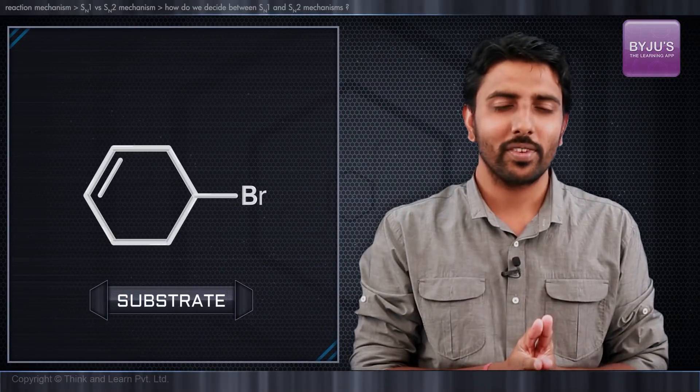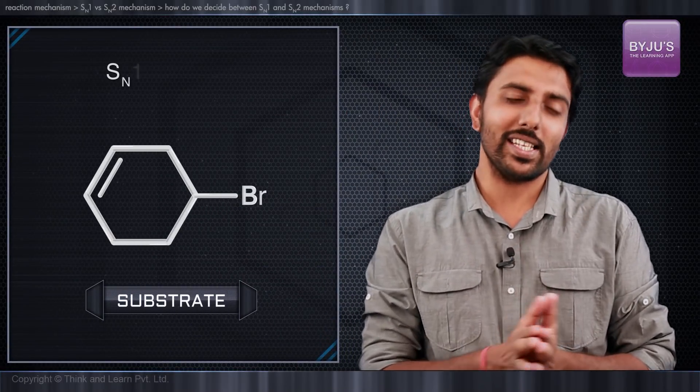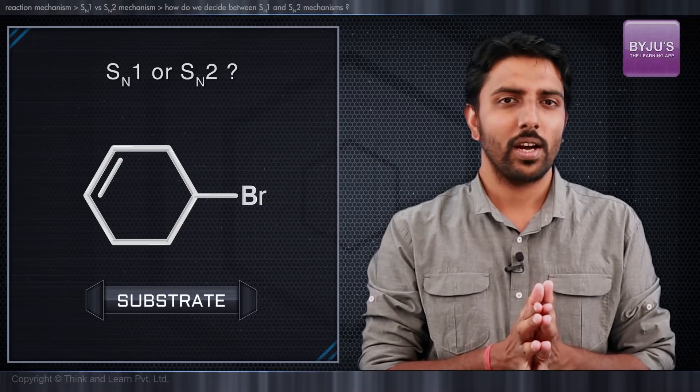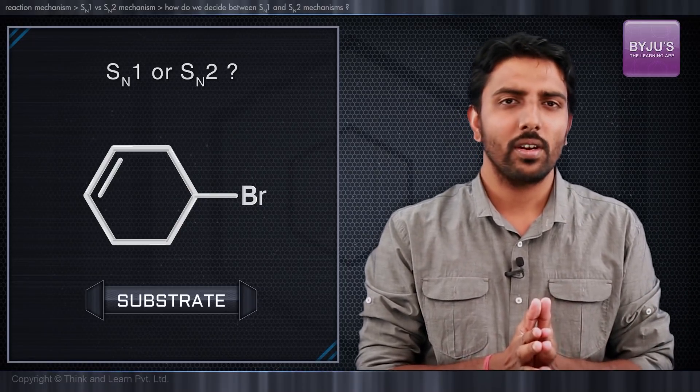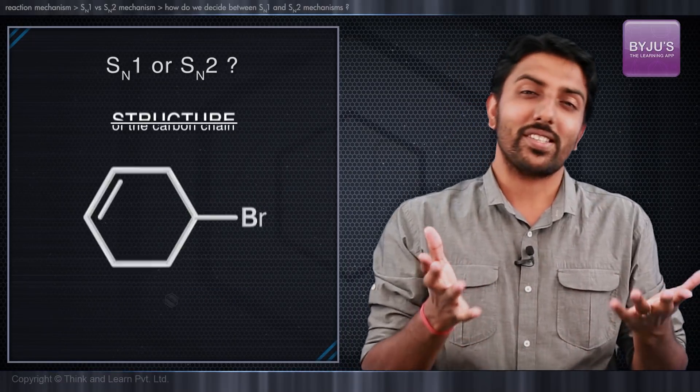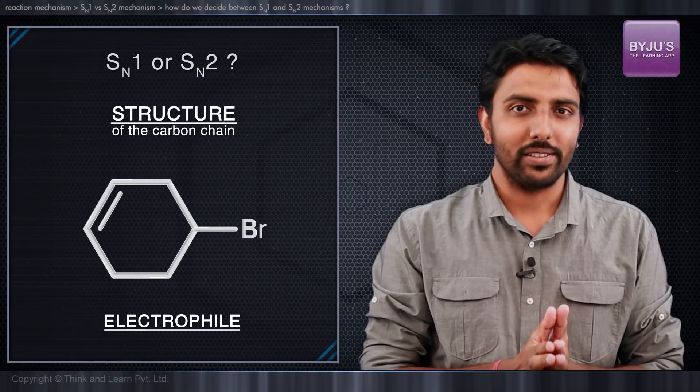Suppose you are given a substrate and you are asked to decide between SN1 and SN2 mechanisms. How do we go about that? This largely depends upon the structure of the carbon chain or the electrophile.